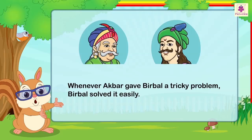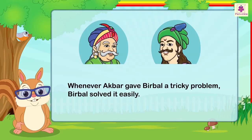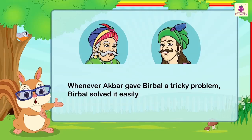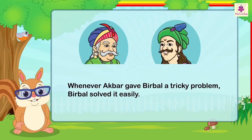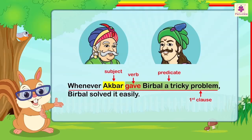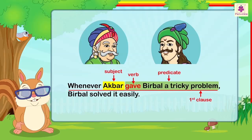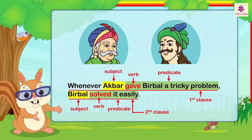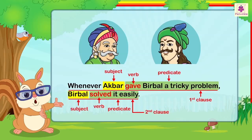Whenever Akbar gave Birbal a tricky problem, Birbal solved it easily. Here, the two clauses are: 'Whenever Akbar gave Birbal a tricky problem' and 'Birbal solved it easily.'